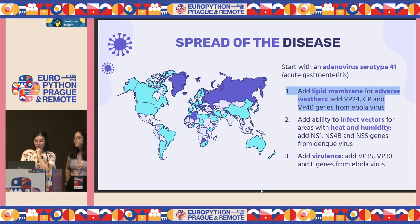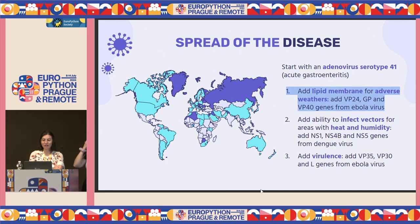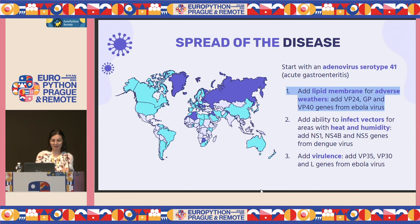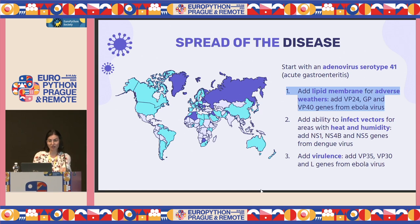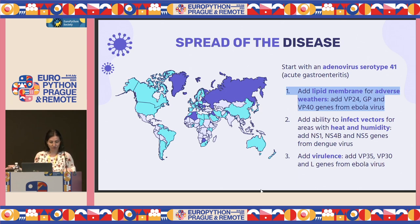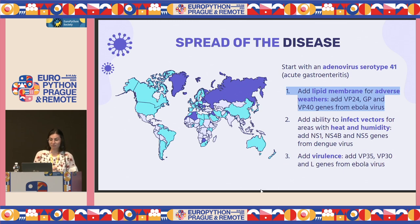Now we want to spread this virus even more. Adenoviruses per se cannot do that with the original virus, so we can modify it by adding specific characteristics. For example, we can add a lipid membrane — like the envelope of the virus — to make it resistant to adverse weather conditions so it can spread to other nations. This will help spread the virus to environments with higher UV radiation or extreme cold. For this, we can add genes VP24, GP, and VP40 from the Ebola virus.